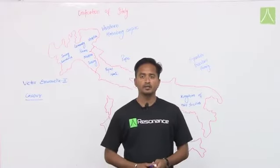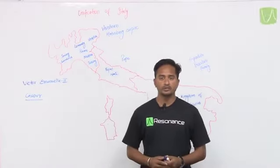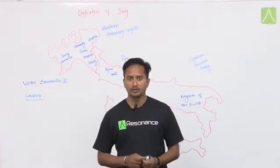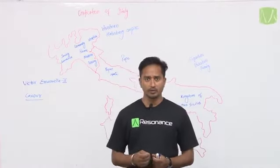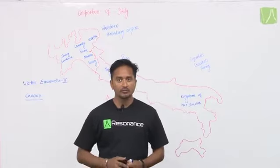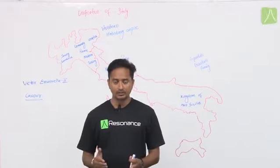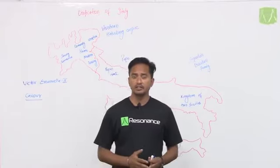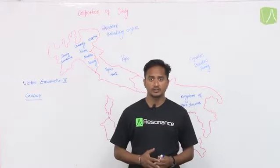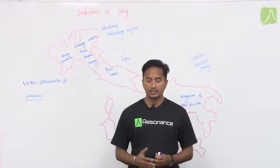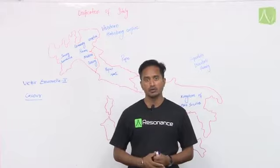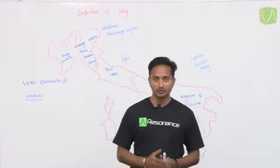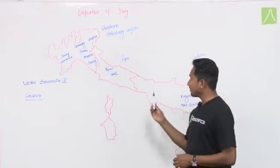Hello, in this part we are going to study about the unification of Italy — how an entire small confederation of Europe visualized the nation, finally formed a nation, and how the rivalry between these nations led to the disaster called World War. So let's understand first how Italy got unified.